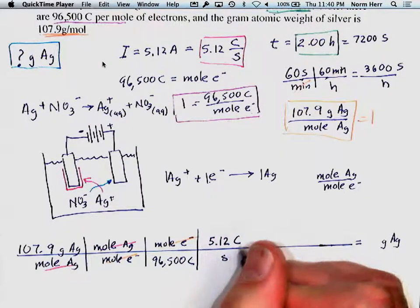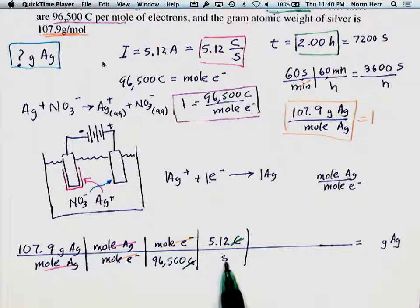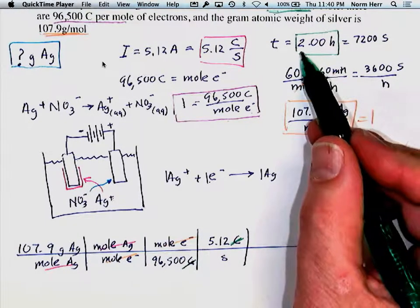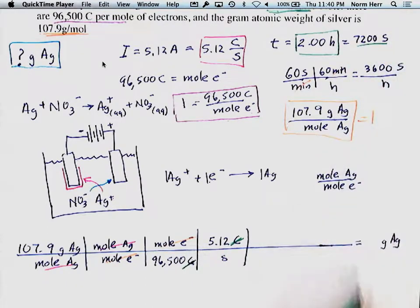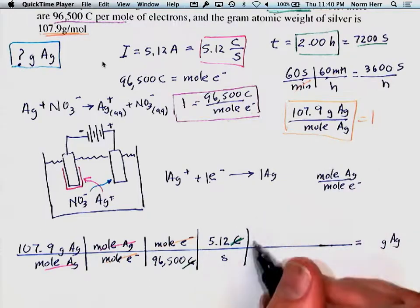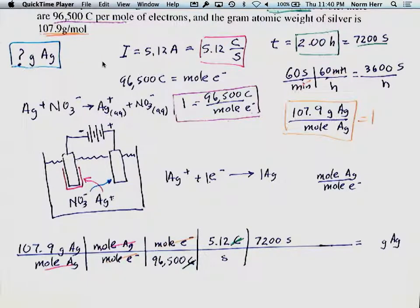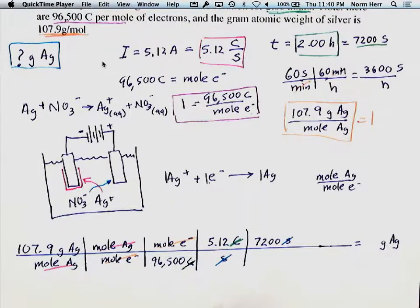We're very close to the final answer. The time was 2.00 hours, which equals 7,200 seconds. Multiplying by 7,200 seconds cancels out the seconds, and our value is now expressed entirely in grams of silver. The only thing remaining is to do the actual math.